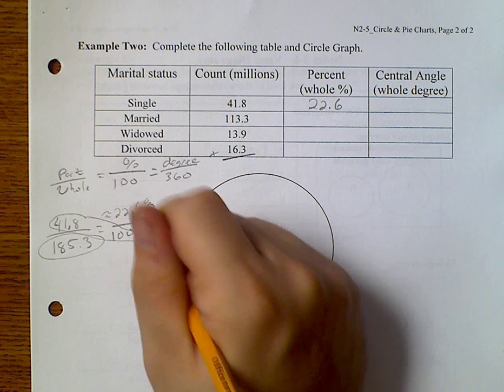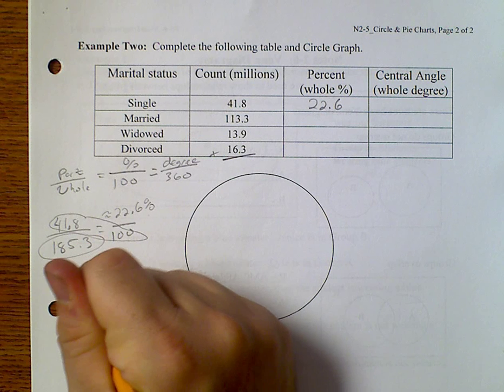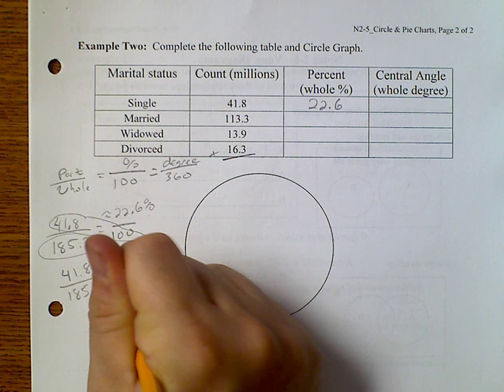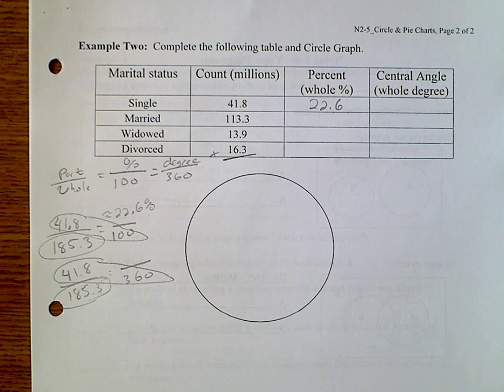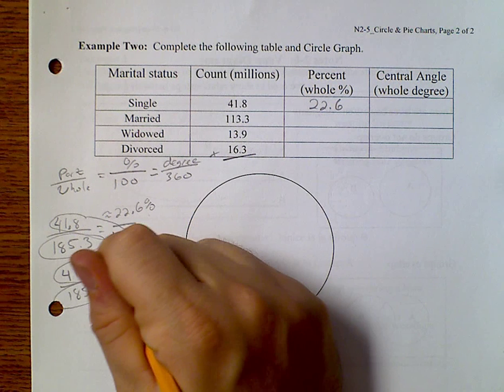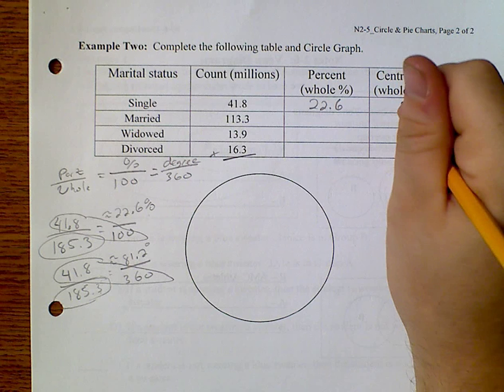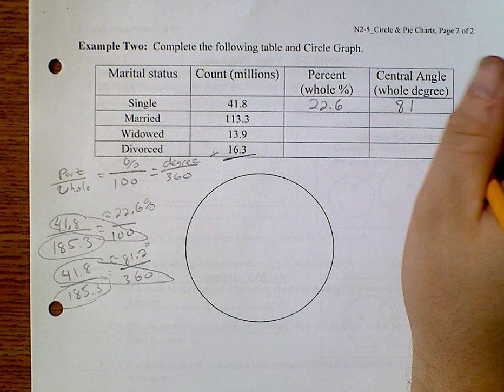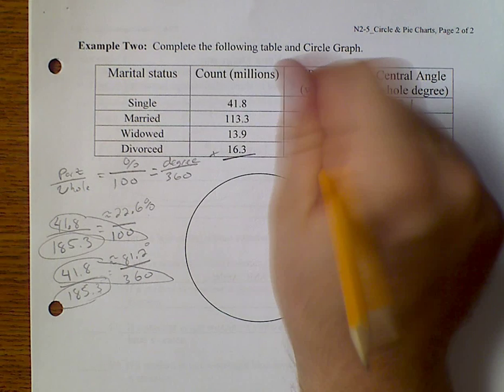And I can do the same thing. 41.8 over 185.3 equals something over 360. Cross multiply and divide. 41.8 times 360 divided by 185.3 gives me approximately 81.2 degrees. It says it's a whole degree, well that would just be 83. And a whole percent, this would be 23%.